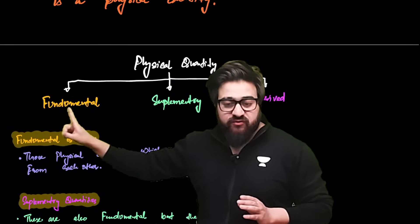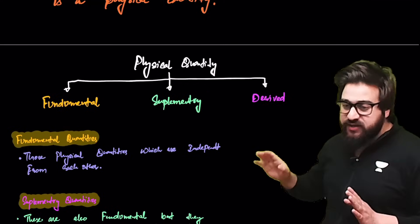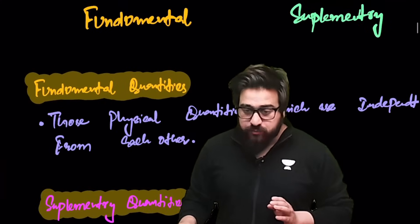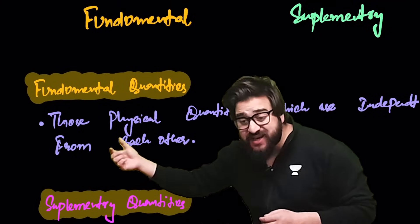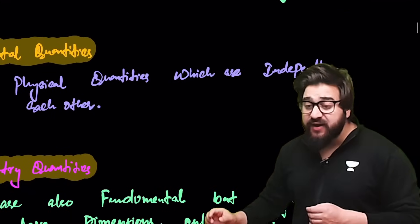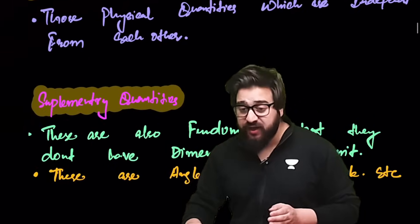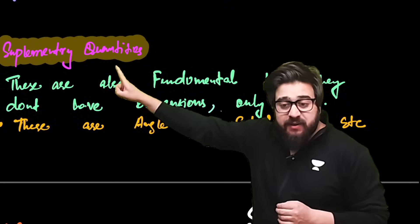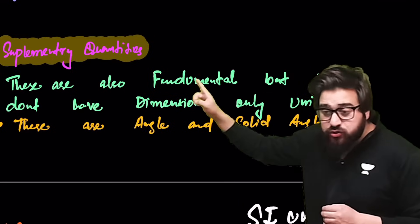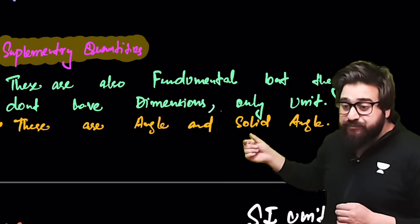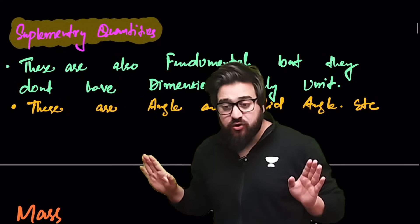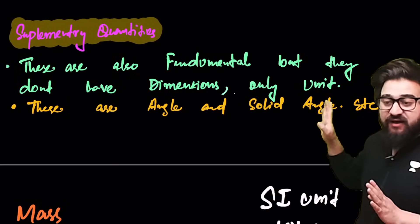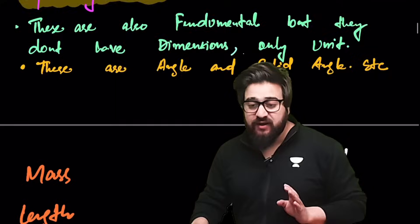Physical quantities are divided into fundamental quantities, supplementary quantities, and derived quantities. Fundamental quantities are those which are independent of each other. Supplementary quantities are also fundamental in nature but they don't have dimensions — they only have units — like angle and solid angle.